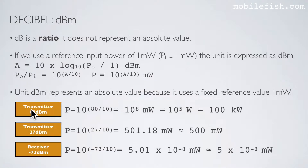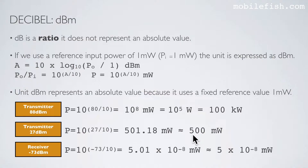Here are three examples. This transmitter has a gain of 80 dBm — the output power calculated with this equation is 100 kilowatts. This transmitter has a gain of 27 dBm — the output power is 500 milliwatts. And the receiver has a loss of minus 73 dBm — the power output is 5 times 10 to the power of minus 8 milliwatts.